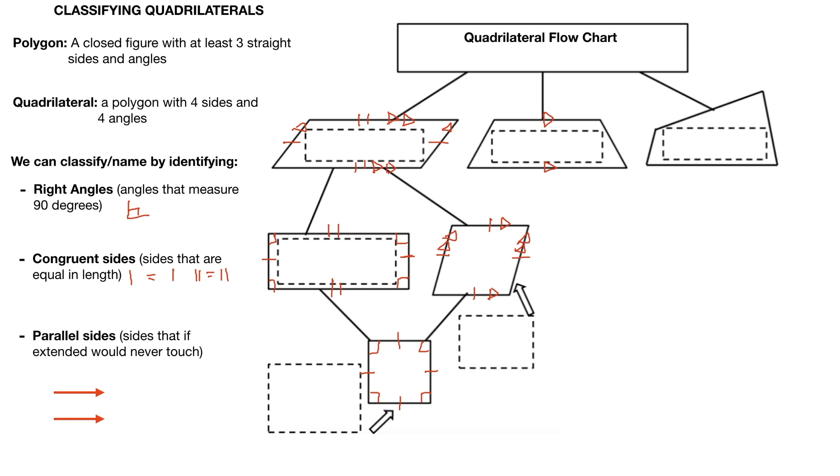A square, which you obviously know of already, has four congruent sides and it also has four right angles. It needs all those things to be considered a square. Rectangle is very similar to a square, but instead of saying four congruent sides, we're saying two pairs of congruent sides. So the top and the bottom and the left and the right.